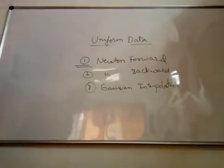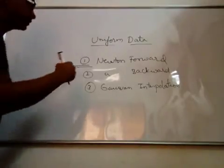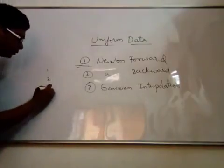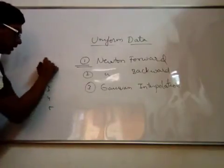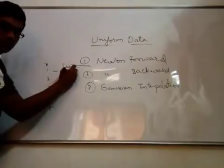So these are the different types of interpolation for uniform data. The data is said to be uniform when the given x values are equally spaced. For example, 1, 2, 3, 4, 5. These are x values and these are f of x values.